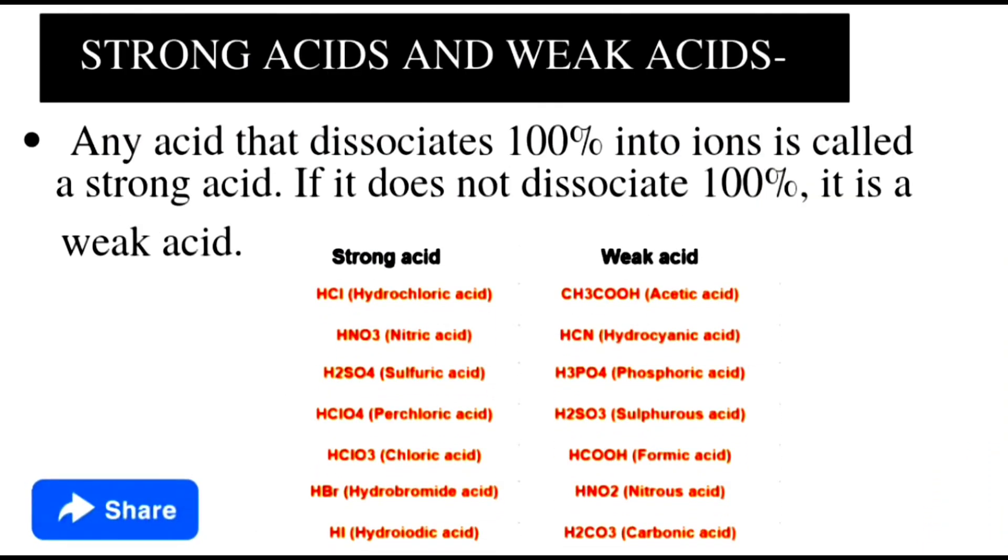Next topic is classification of acids: strong acid and weak acid. What is strong acid? Any acid that dissociates 100% into ions is called strong acid. If it does not dissociate 100%, it is weak acid. You can see the list of strong acids and weak acids. You can learn them so that your concepts are clear. This is very important for exams.